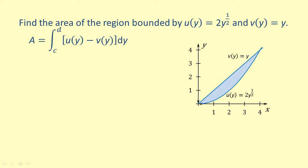So, substituting our functions into the formula, we get that the area is equal to 2y to the one half minus y dy from 0 to 4.